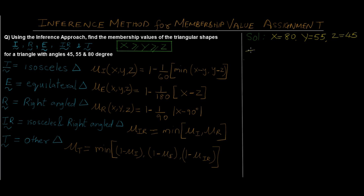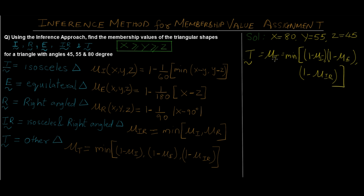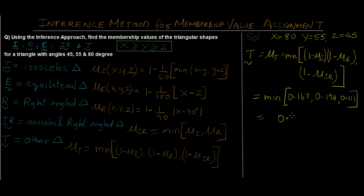For other triangles, denoted by T, the formula is μ_T = min(1 − μ_I, 1 − μ_E, 1 − μ_IR). To calculate μ_T you need all the previously computed values. Substituting and subtracting from 1: min(1 − 0.833, 1 − 0.8056, 1 − 0.833) = min(0.167, 0.194, 0.167). Wait — IR used 0.833, so the minimum of 0.167, 0.194, and 0.111 is 0.111. So 0.111 is our final answer for other triangles.